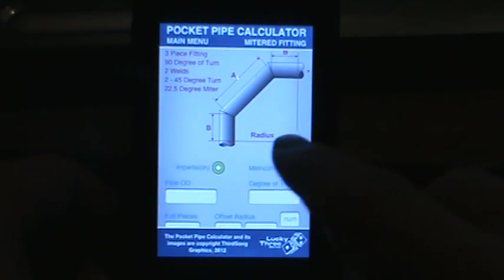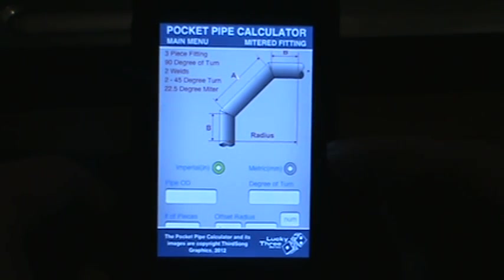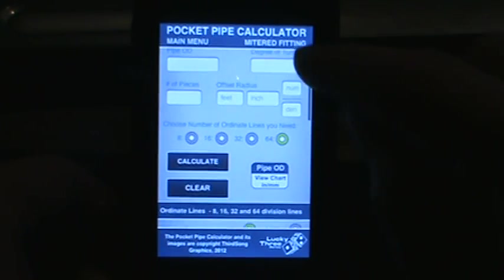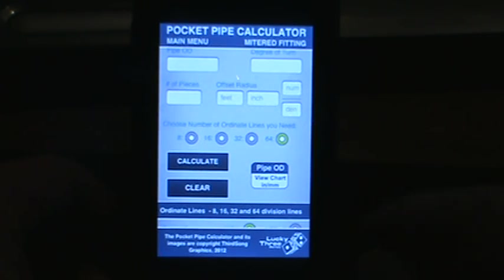If you scroll up here's the radius. Basically your radius is the take out of a fitting. It's a common term even with butt weld fittings for radius.